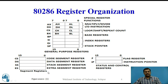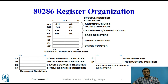There are also 4 segment registers namely code segment register, data segment register, stack segment register and extra segment register. The purpose of these segment registers is to store the base addresses of their corresponding memory segments. The instruction pointer is a register used to store the address of the next instruction to be executed. The flag register in case of 80286 is slightly a modified version of the 8086 case.